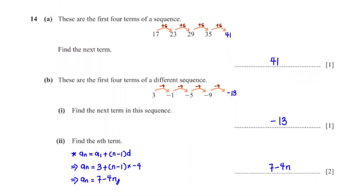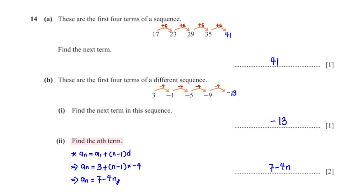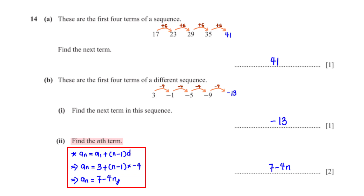These are the first 4 terms of a different sequence. Find the next term in this sequence. We see that the terms have a common difference of minus 4. So to get the next term, we subtract 4 from negative 9, giving us negative 13. Find the nth term. Using the nth term formula for sequences with a common difference, a1 is the first term of the sequence, which is 3, and d is the common difference, which is negative 4. When we simplify this, we get 7 minus 4n.